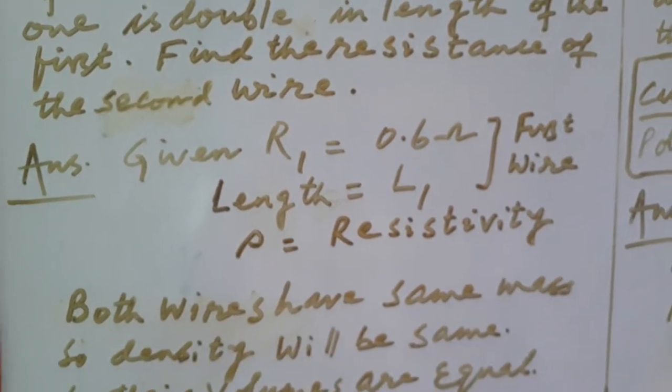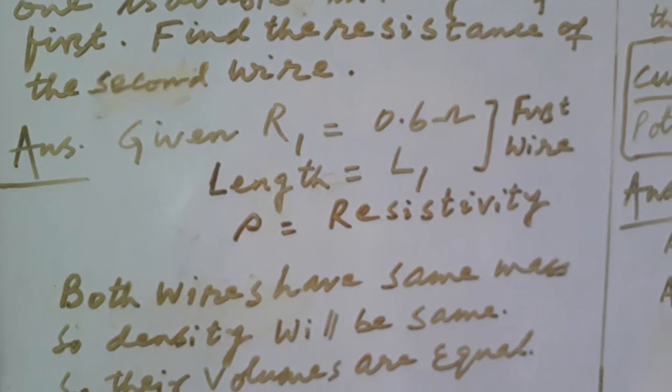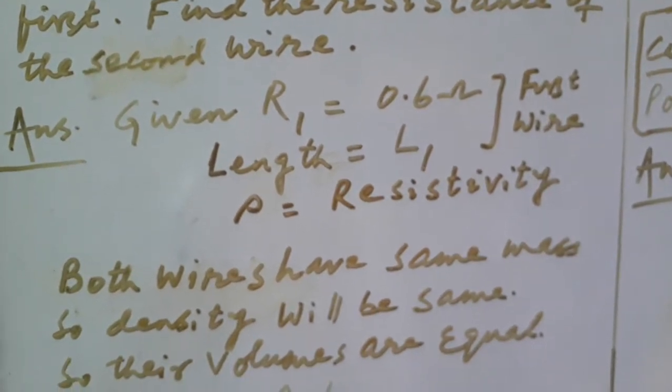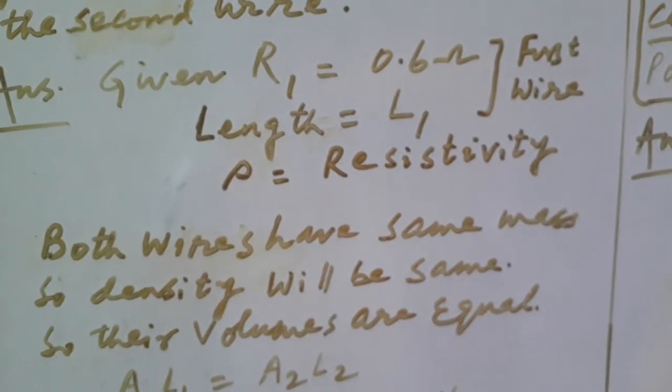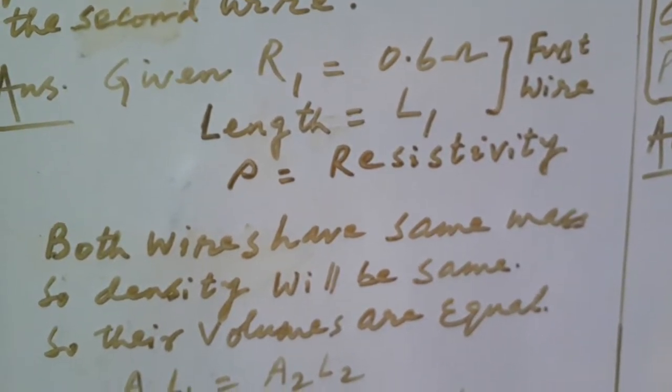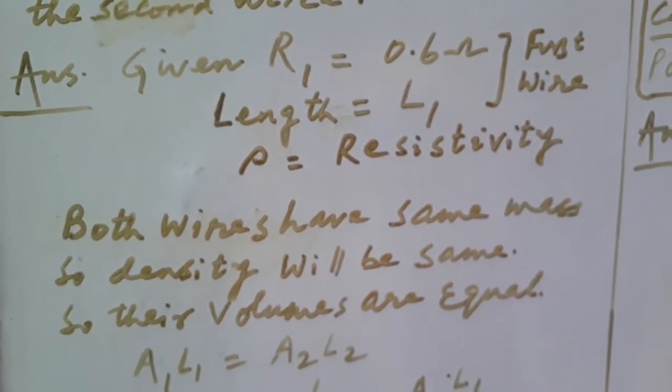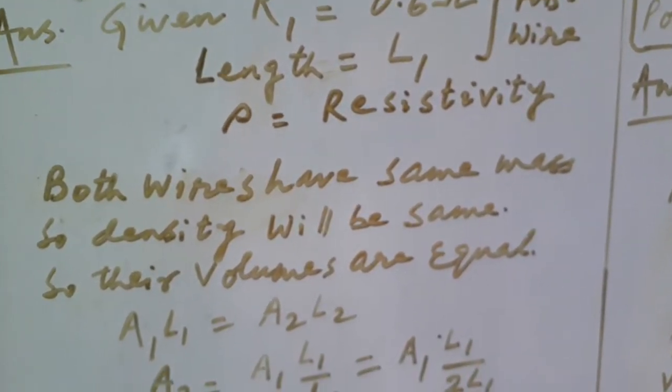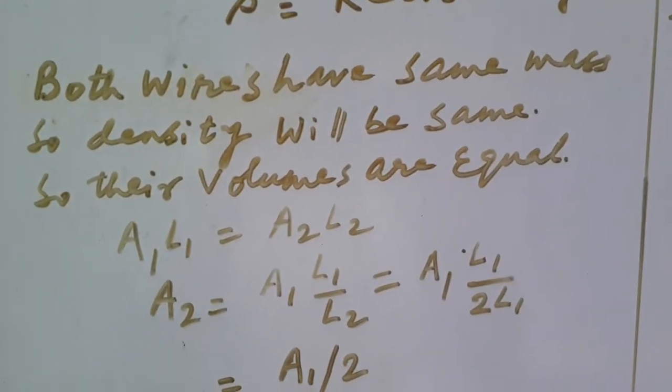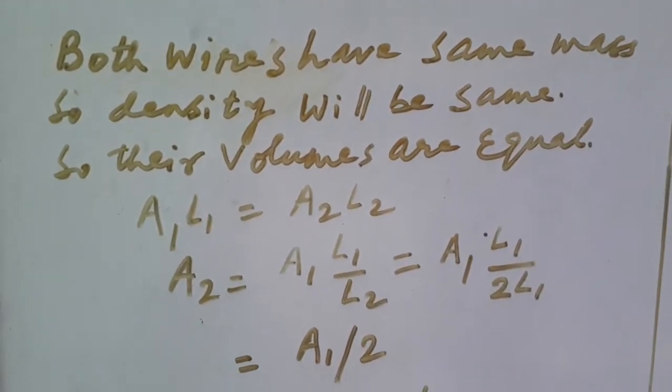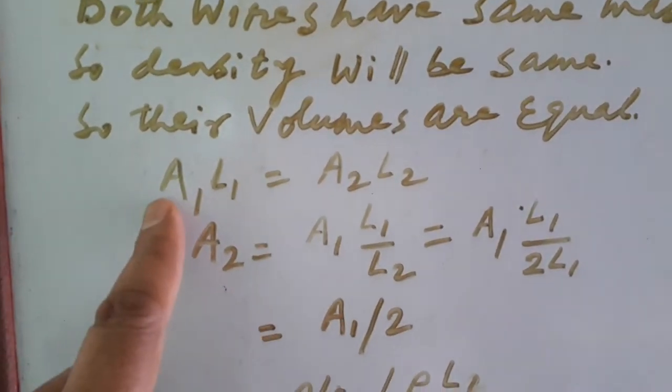Here the given value of R1 is 0.6 ohm. Let us suppose that length in the first case be L1 and resistivity will be same because the wire is of same material in both the cases. Let it be rho. Since both the wires have same mass and same material, density will be same, so their volumes are equal.